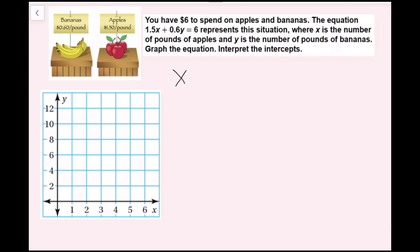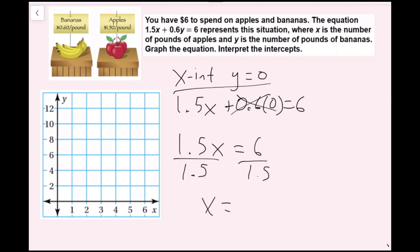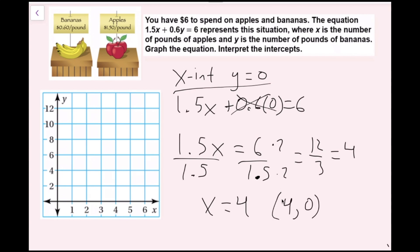To find the x-intercept, that is when y equals 0. I rewrite the equation: 1.5x plus 0.6 times 0 equals 6. This term goes away, so I get 1.5x equals 6. Dividing by 1.5 on both sides — you can move the decimal to get 60 over 15, or multiply by 2 to get 12 over 3 — either way x equals 4. So my x-intercept is 4, corresponding to the ordered pair 4, 0, and I plot that on the graph.